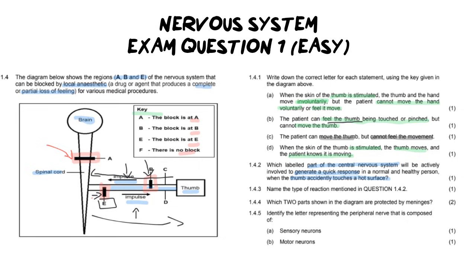Then it says for number three, name the type of reaction mentioned in question 1.4.2. It is a reflex arc because that's remember the arc between the sensation and the stimulus and your spinal cord. And then if you haven't learned that just yet, you can't remember it, you should click the card above now where I explain reflexes in more detail for you.